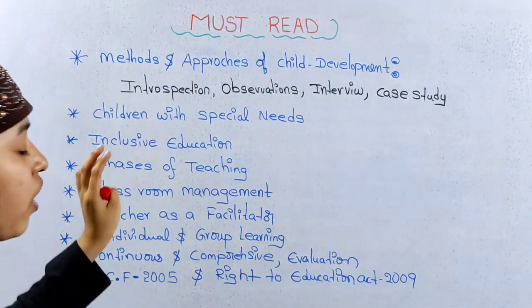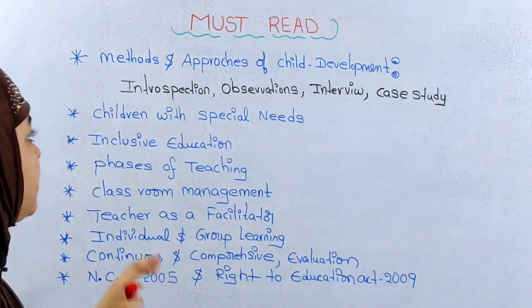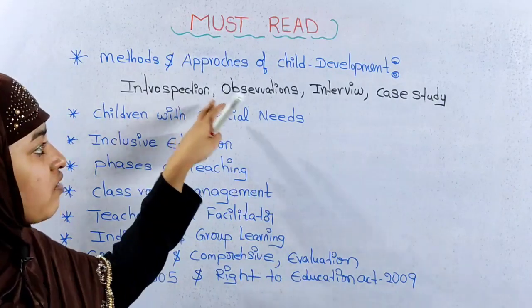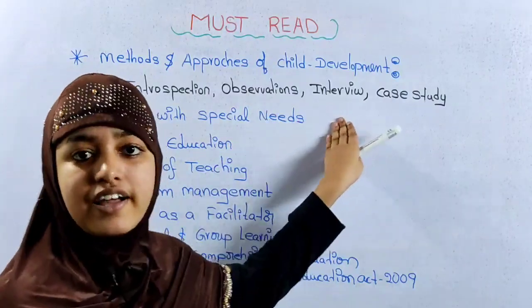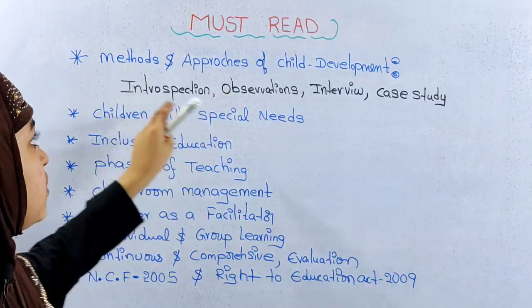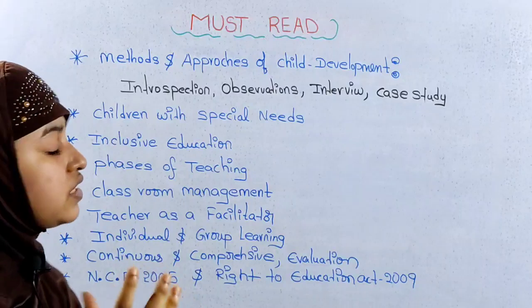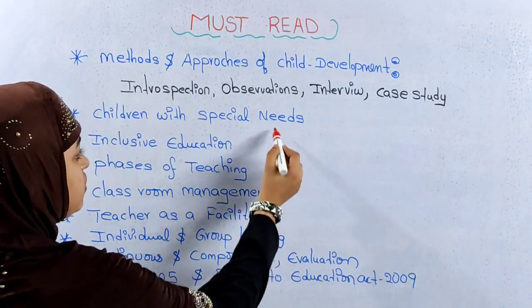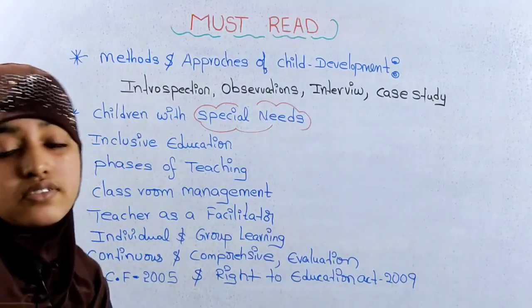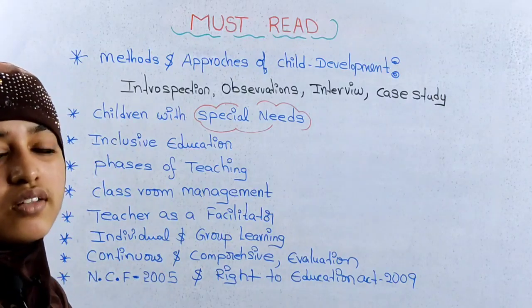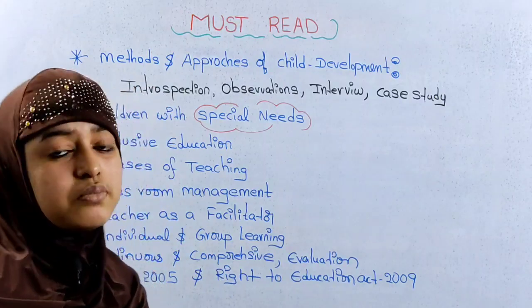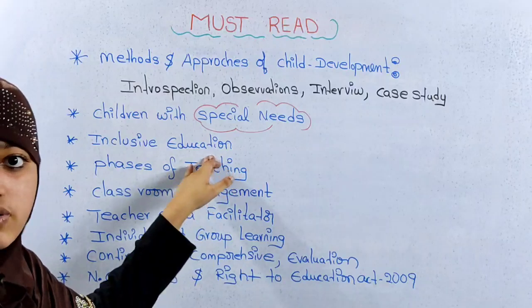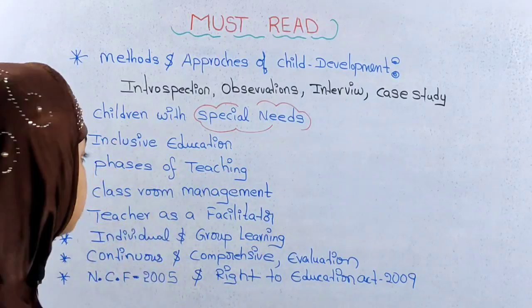Methods and approaches of child development include introspection and observations, interview, and case studies. Children with special needs are very important — we have gifted children with special needs and handicapped children. Children with special needs is a very important topic.